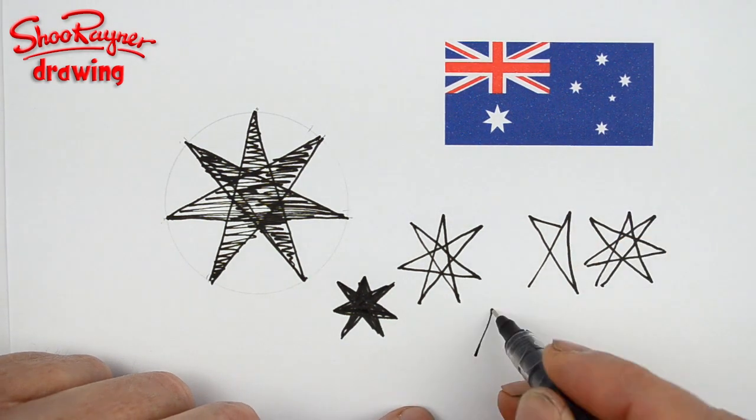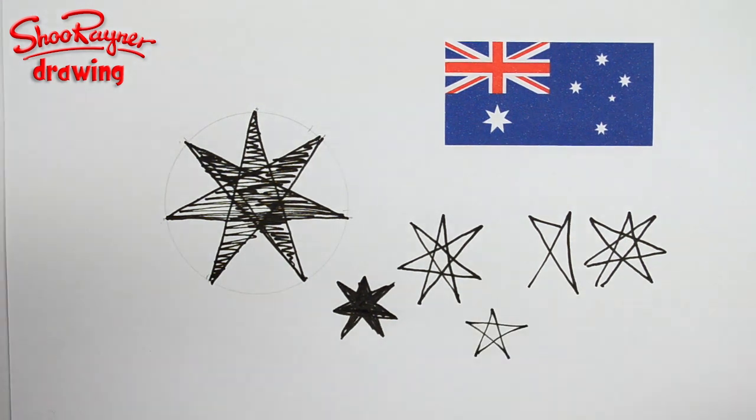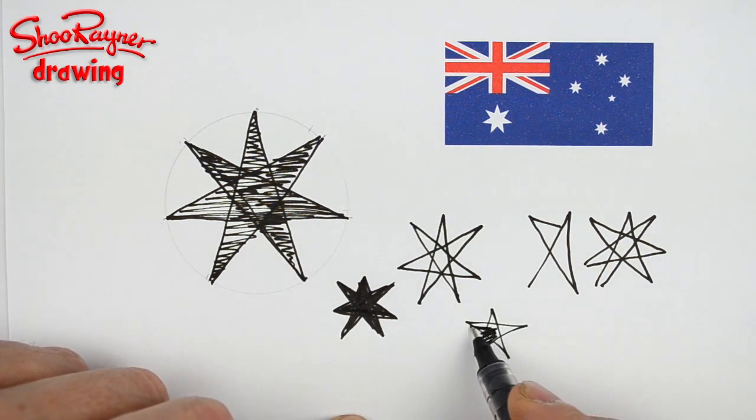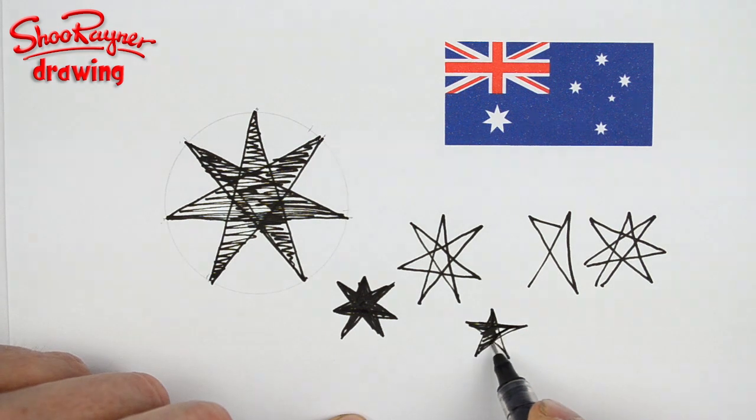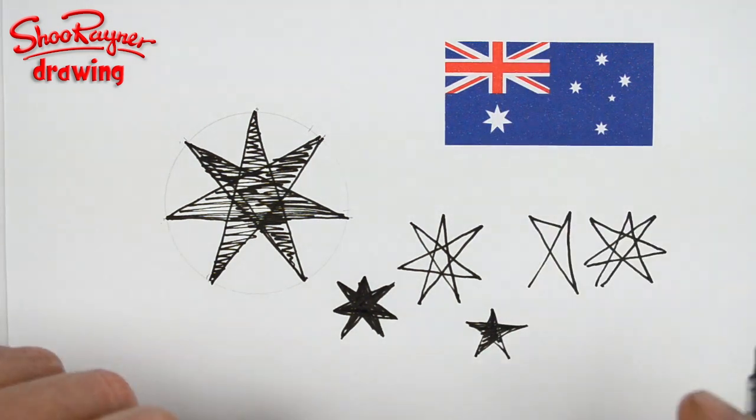If you want to do a five-sided star, because we've got a little five-sided star, then it's up, down, across, across, and back. I've shown you how to do that before, I'll put a little link.